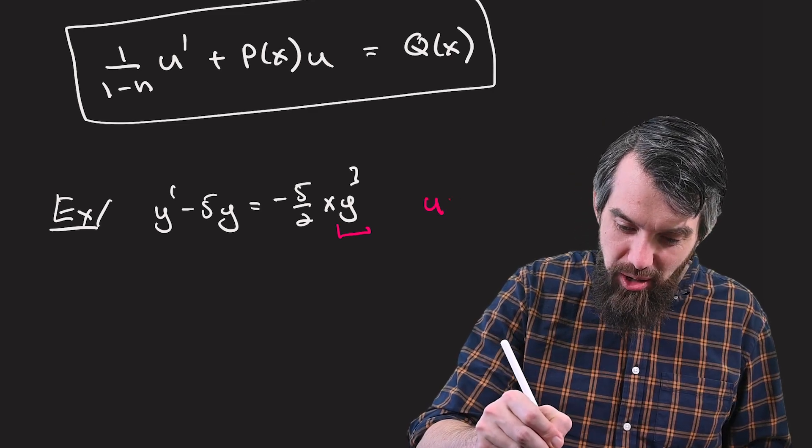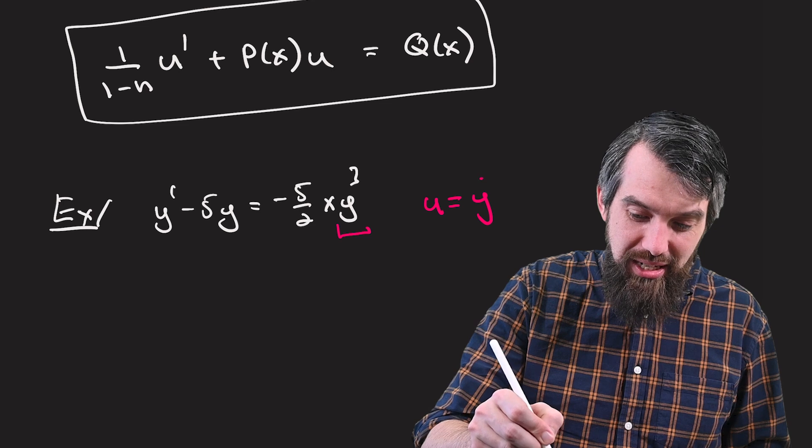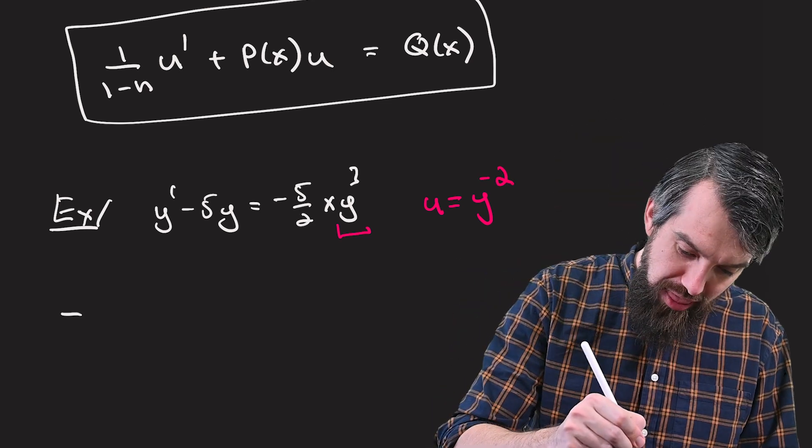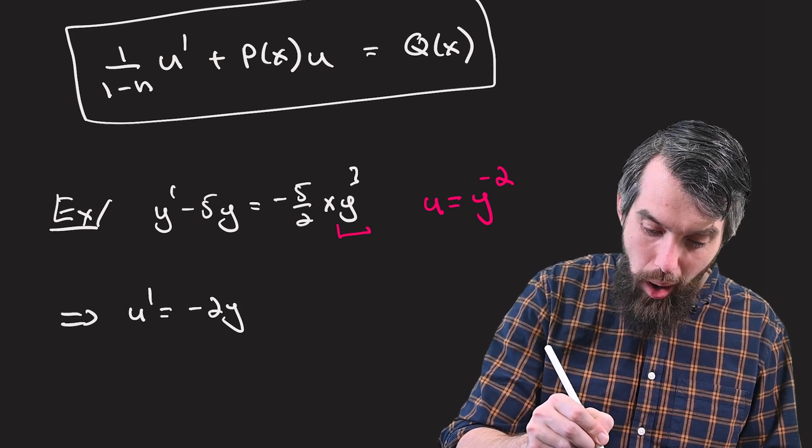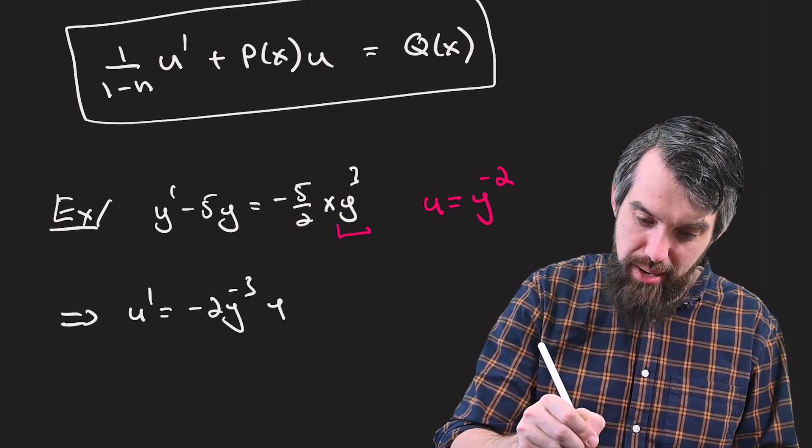And so what I observe here is that this is a Bernoulli equation with y cubed. And so what I want to do for my change of variables is u is y to the minus 2. I then continue the method, which first involved taking a derivative. So this is minus 2 y to the minus 3 times y prime.